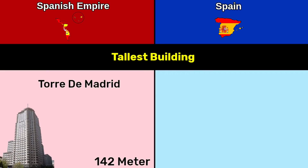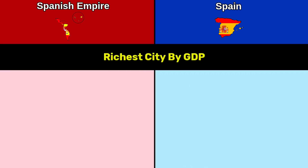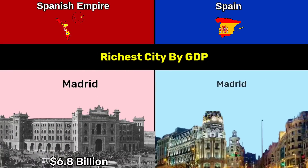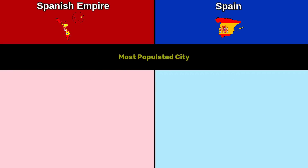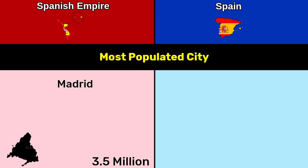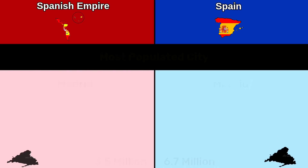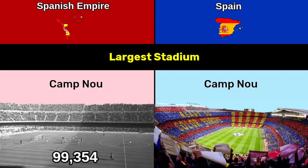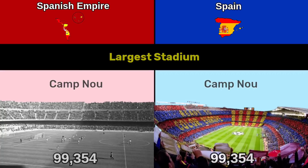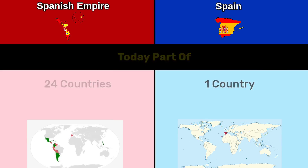Tallest building: Spanish Empire — Torre de Madrid at 142 meters; Spain — Torre de Cristal at 249 meters. Richest city by GDP: Madrid — Spanish Empire 6.8 billion dollars; Spain 281 billion dollars. Most populated city: Madrid — Spanish Empire 3.5 million; Spain 6.7 million. Largest stadium: Camp Nou for both sides, capacity 99,354. Today's territory spans 24 countries vs 1 country.